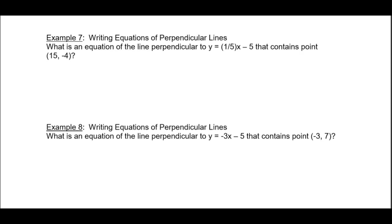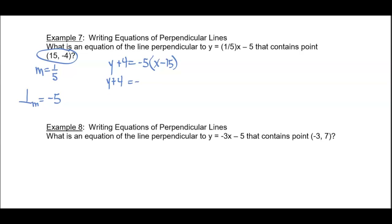Writing the equations of perpendicular lines: What is the equation of the line perpendicular to y equals one-fifth x minus 5 that contains the point (15, negative 4)? The slope of the given line is 1 over 5, so the perpendicular slope is its opposite reciprocal, which is negative 5. Using point-slope: y plus 4 equals negative 5 times (x minus 15). Distributing: y plus 4 equals negative 5x plus 75. Subtracting 4 from both sides: y equals negative 5x plus 71.